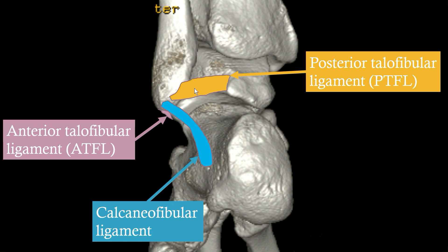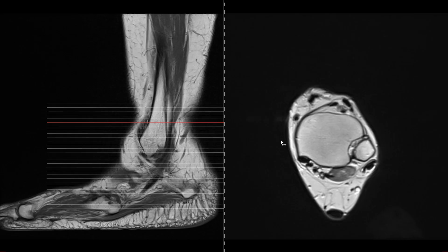This view shows the course of the posterior talofibular ligament, running from the back of the tip of the fibula onto the back of the talus. Now let's go through some cases and have a look at how you can identify these ligaments.